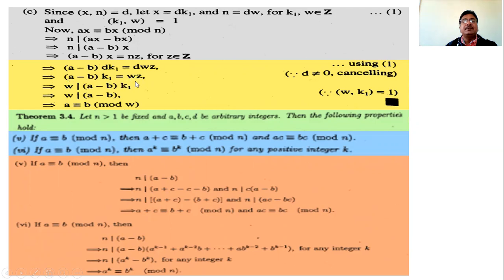This means a minus b times k1 is expressed in the form w into some integer, so w divides (a minus b) times k1. But gcd(w, k1) equals 1, so by the corollary on Euclid's lemma, w divides a minus b. Therefore a is congruent to b modulo w.